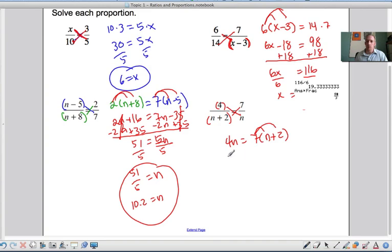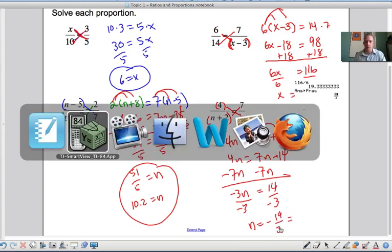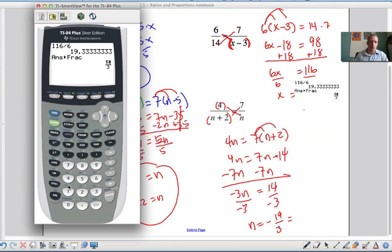So now I distribute 4n plus 14. Since I have no numbers over here I want to eliminate the variable over here, and I get negative 3n equals 14. Divide both sides by negative 3. That gives me n equals negative 14 over 3. And that would be 14 divided by 3, negative 4.6 repeating.